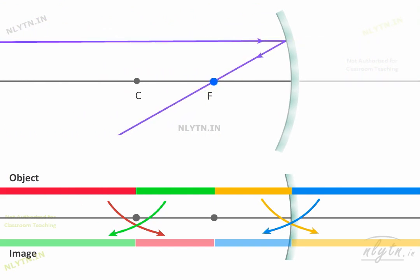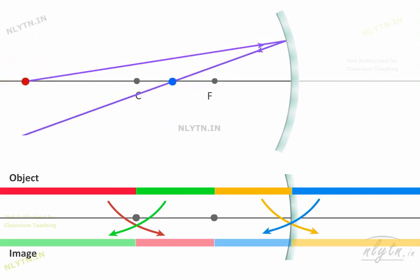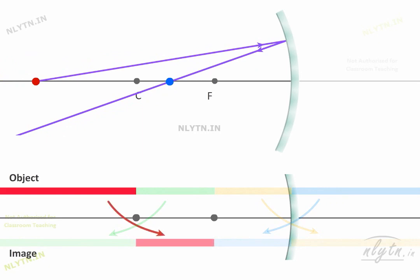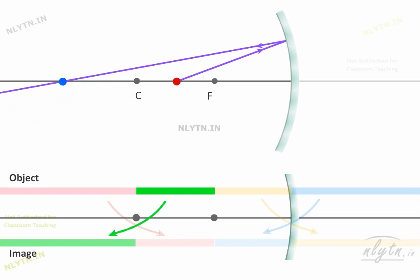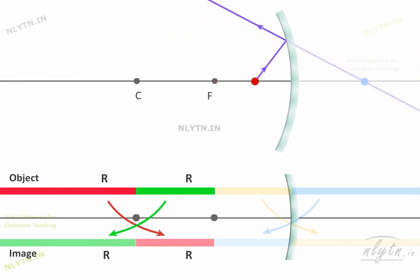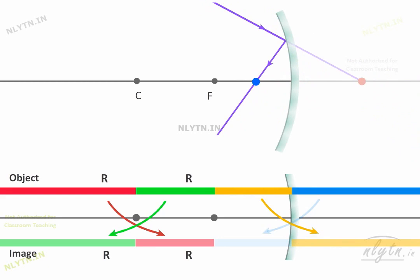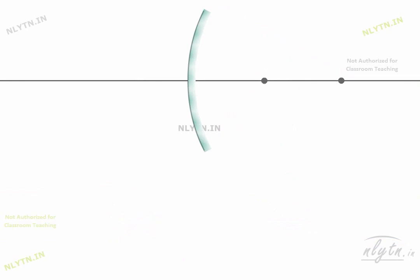To summarize: when the object is in this region, the image is in this region; and when the object is in this region, the image is in this region — here both object and image are real. For this part: when the object is in this region, the image is in this region; and when the object is in this region, the image is in this region. In this region, the object is real and the image is virtual; and here the object is virtual and the image is real. For a convex mirror also, a similar relationship holds.